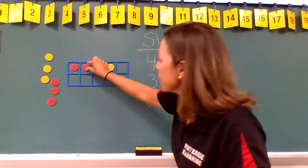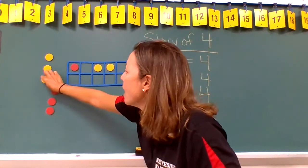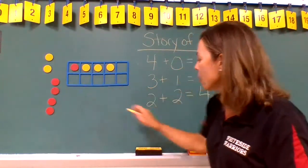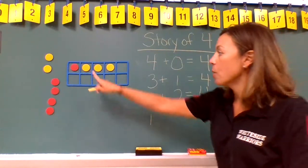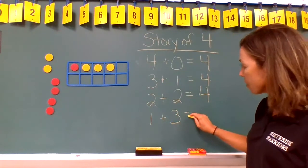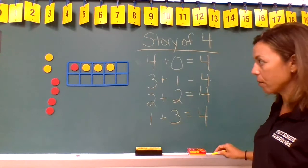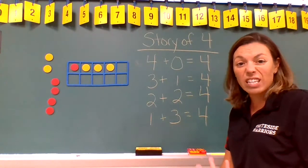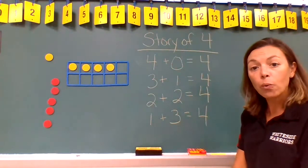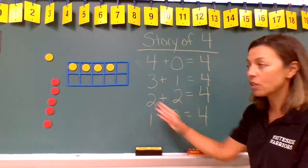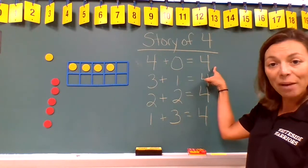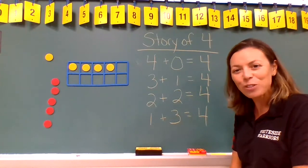Let's do it again. Let's take a red and replace it with a yellow. Now we have one red counter plus one, two, three yellow counters, giving us a total of four. Now if we replace the last red counter with a yellow, which number sentence shows four yellow plus zero red? If you said the top one, you're right. And that's how you make the story of four.